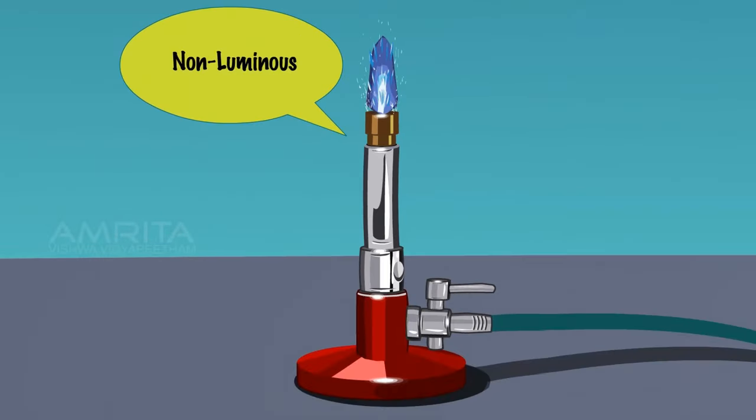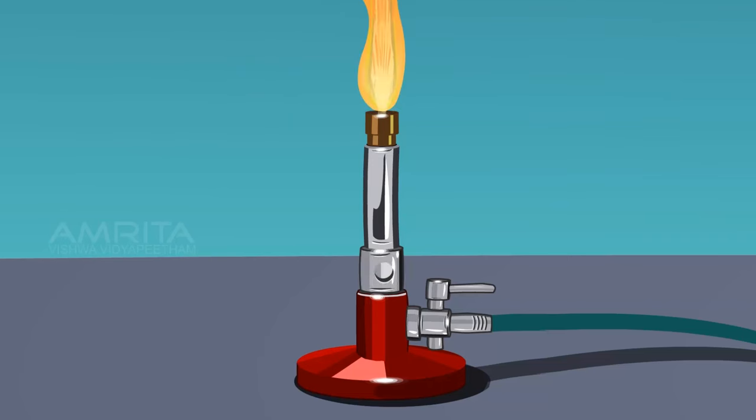A non-luminous flame is produced. On closing the air hole of the burner by rotating the air-adjusting disc, a luminous flame is produced. On opening the air hole of the burner, a non-luminous flame is produced.